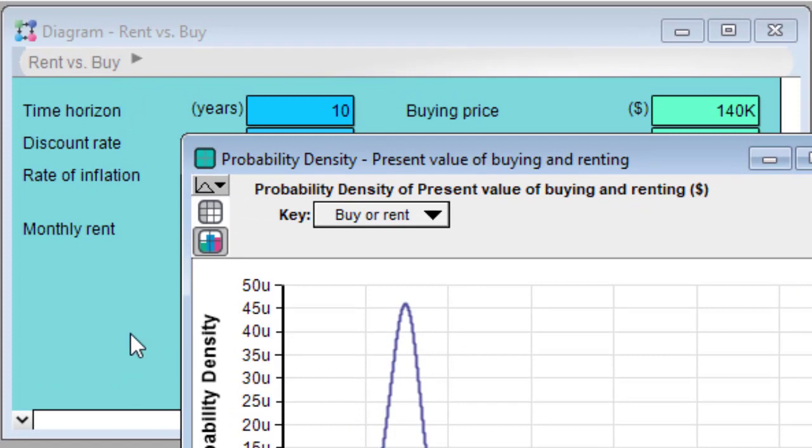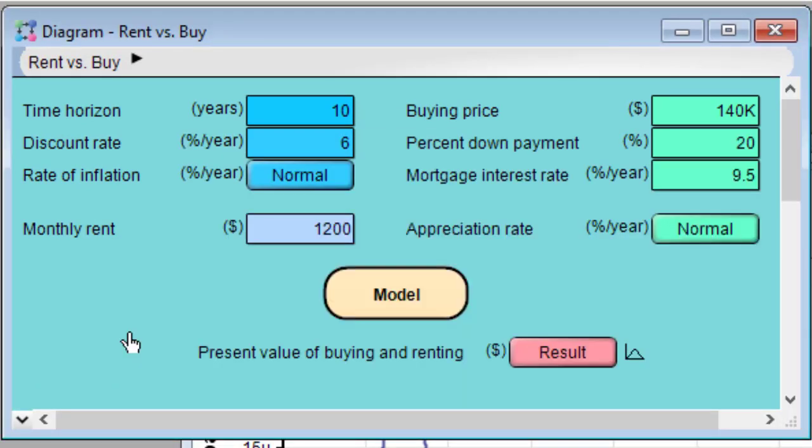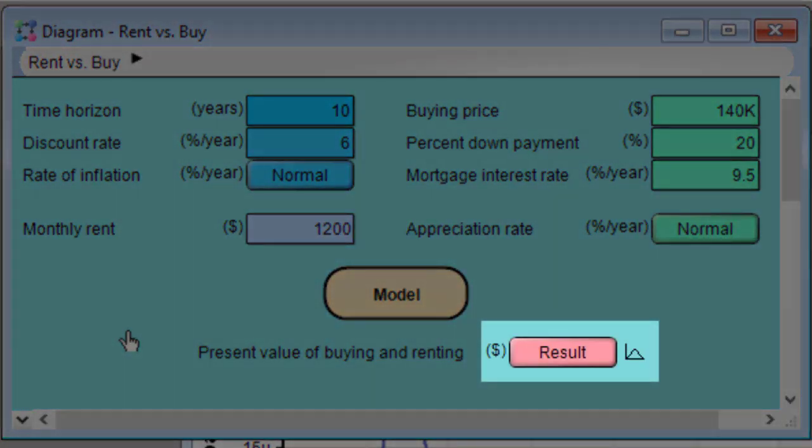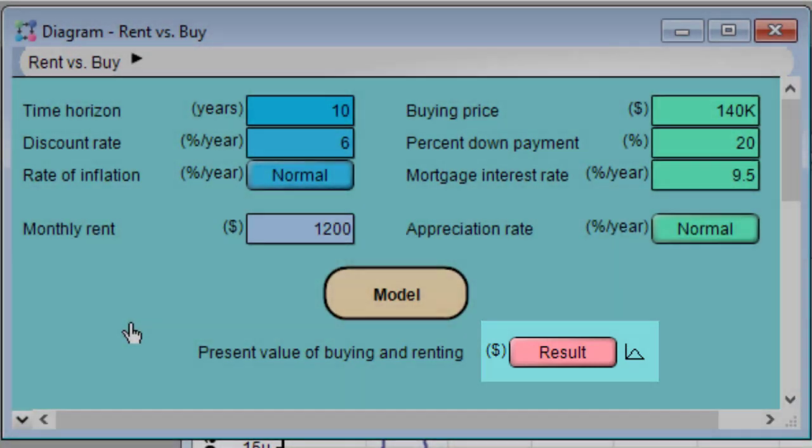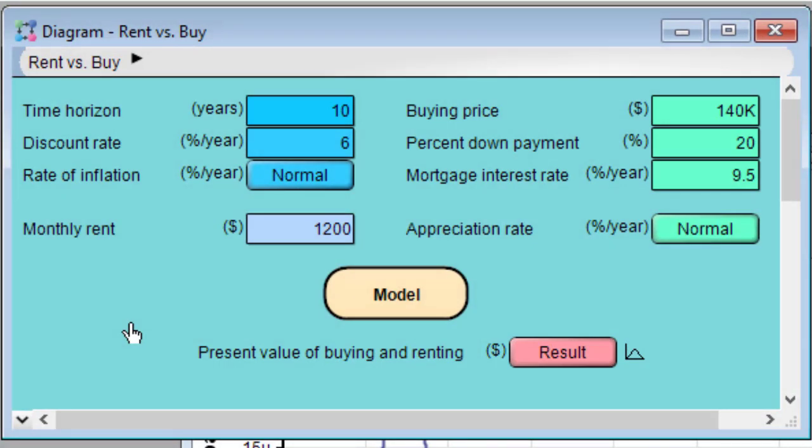Now let's click on the diagram window and bring it back into focus. Notice that the calc button has now changed to say result. This indicates that the result is computed. So if I were to click it, it would just reshow the computed value.